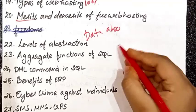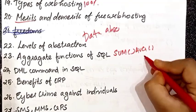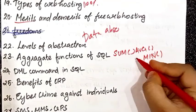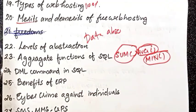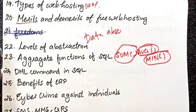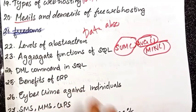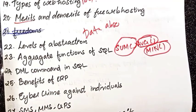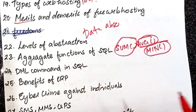Aggregate functions in SQL: Sum, Average, Minimum. Then DML command — DML command. Benefits of ERP are important: improved resource utilization, better customer satisfaction, provides accurate information, decision-making capability, flexibility, information integrity.